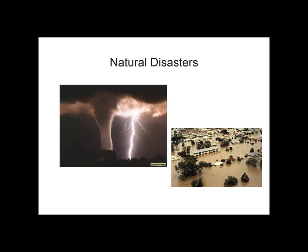The second major category is natural disasters — forces of nature that pose the most dangerous threats because they are unexpected and can occur with very little warning. These threats can disrupt not only the lives of individuals but also the storage, transmission, and use of information. This includes fire, floods, earthquakes, lightning, landslides or mudslides, tornadoes or severe windstorms, hurricanes or typhoons, tsunamis, electrostatic discharge, and dust contamination. Since it's not possible to avoid many of these threats, management must implement controls to limit the damage and prepare contingency plans for continuing operations.